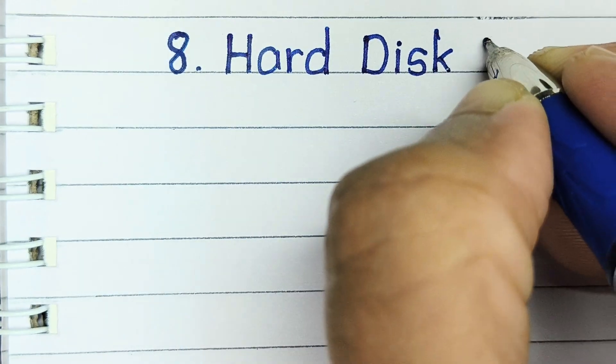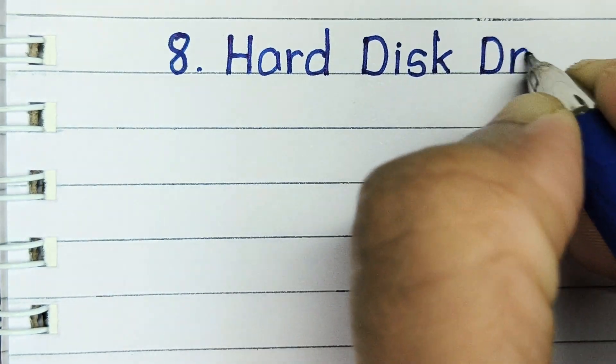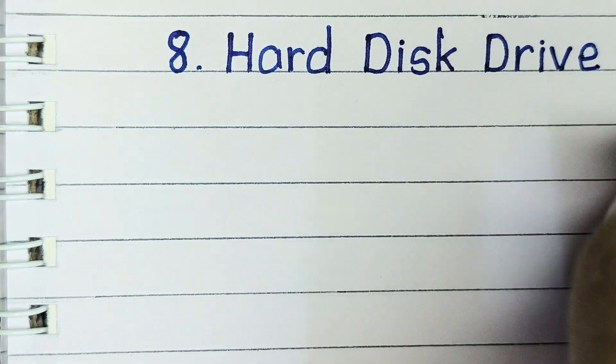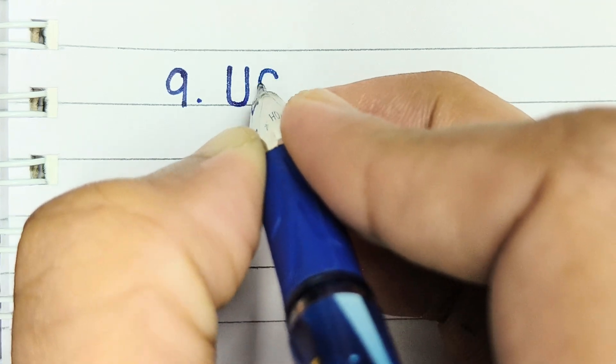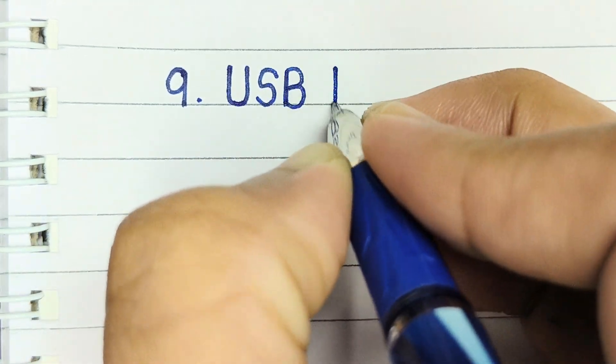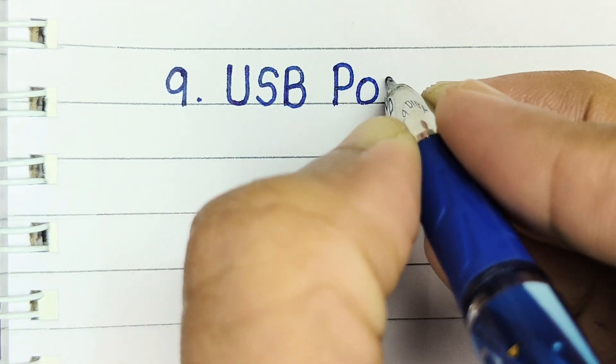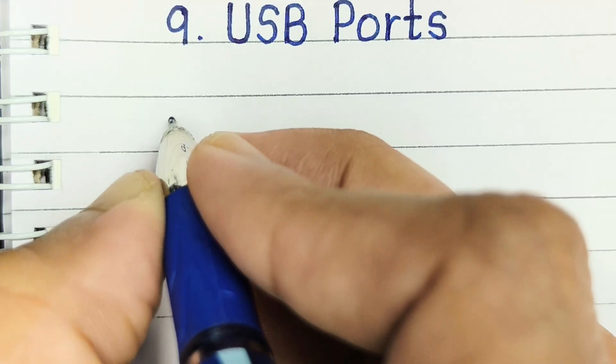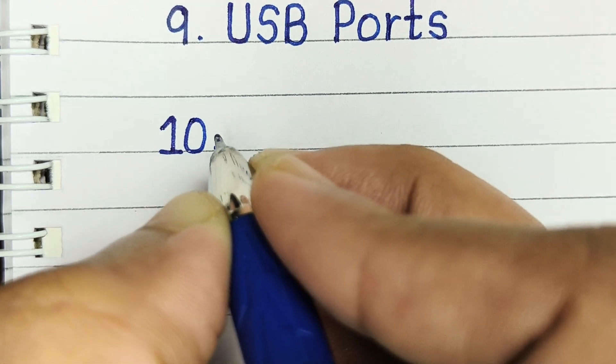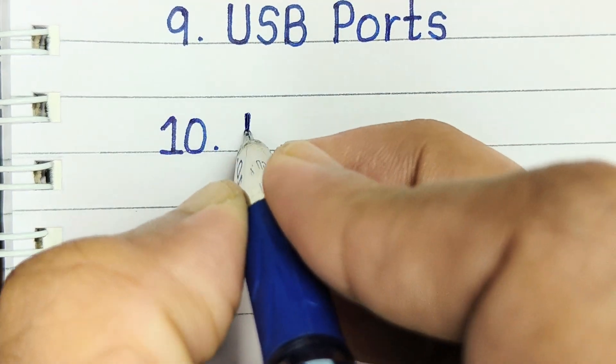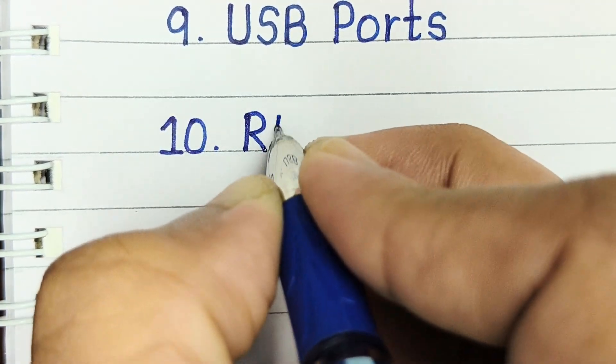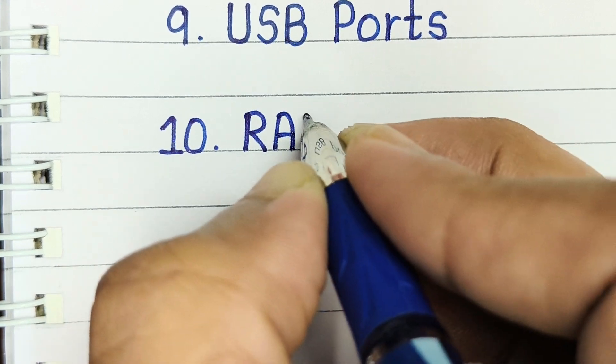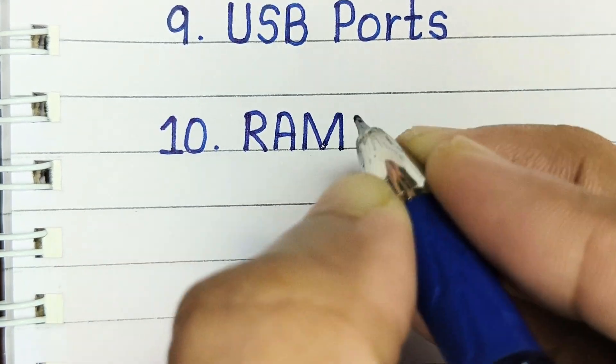Number eight: hard disk drive. Number nine: USB ports. Number ten: RAM.